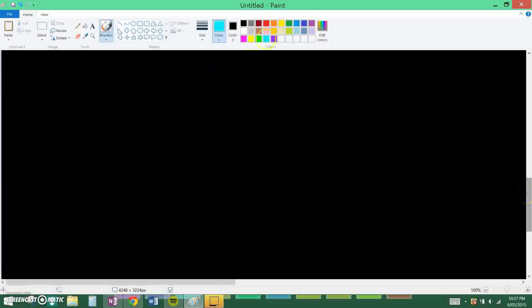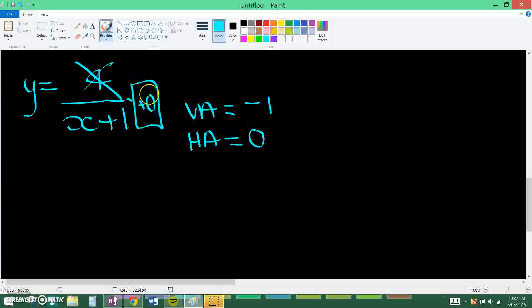So if it's y equals four over x plus one, you just ignore that if there's no x at the top, just ignore that for now. So the vertical asymptote will be negative one and the horizontal asymptote will be zero because there's nothing here, so it's just plus zero. Let's try another one.